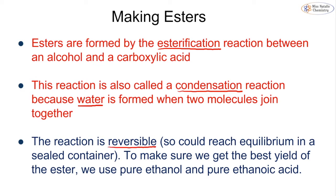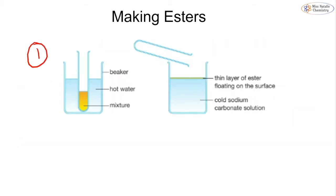This is a reversible reaction — we can go from the alcohol and carboxylic acid to the ester and water, or go back the other way. Because it is reversible, in a sealed container we could reach an equilibrium. You will have covered equilibrium in topic 3C, so look back on that if needed. To get the best yield, we use pure ethanol and pure ethanoic acid.